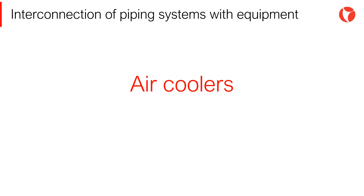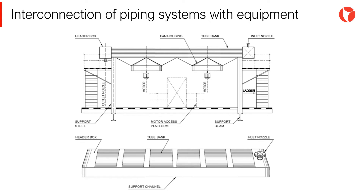Air coolers are usually located near other types of equipment, which contributes to the flexibility of the system. The nozzle layout of air coolers is directly related with the operation of the equipment and therefore they cannot be very easily relocated. The first thing to know prior to the piping layout is the configuration and operating principle of an air cooler. Mainly, the designer must know the number of passes of the equipment and the number of nozzles in the headers.